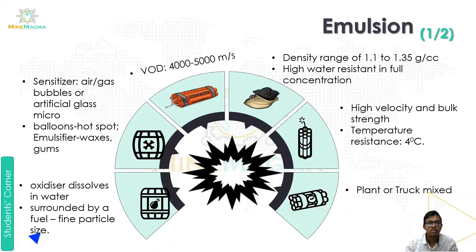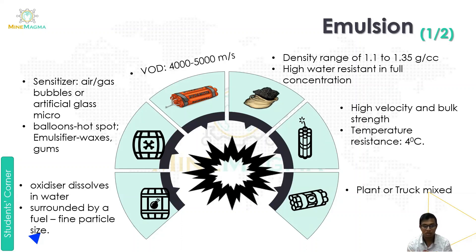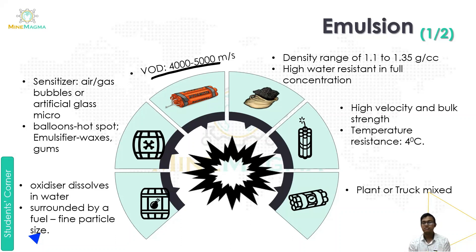Let's start with emulsion. In emulsion, the oxidizer dissolves in water and is surrounded by a fuel which is of fine particle size. The sensitizer used is air or gas bubbles, or artificial glass micro-balloons — used as hotspots — along with emulsifiers such as waxes or gums. The velocity of detonation is 4,000 to 5,000 meters per second.